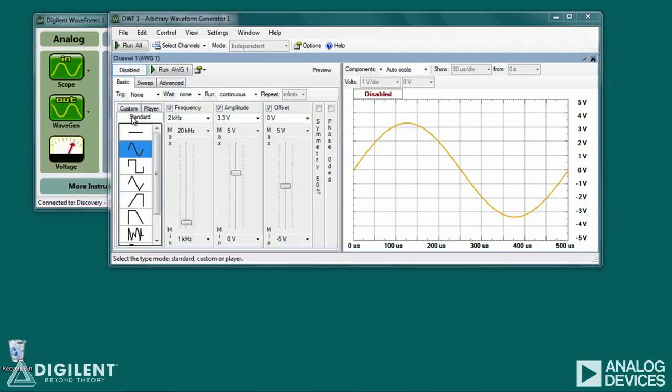Under the Standard tab, a series of icons allow you to select from a set of commonly used, predefined signals. For example, constant, sinusoidal, square, and triangular waveforms can be created by clicking on the appropriate icon.